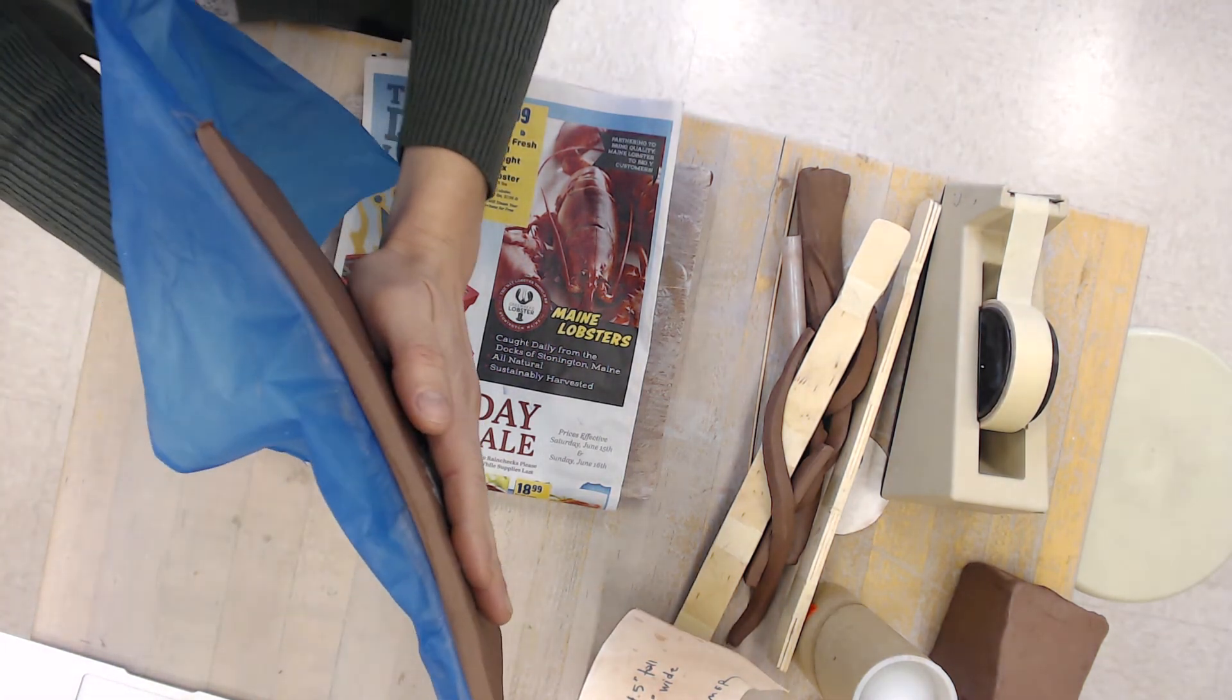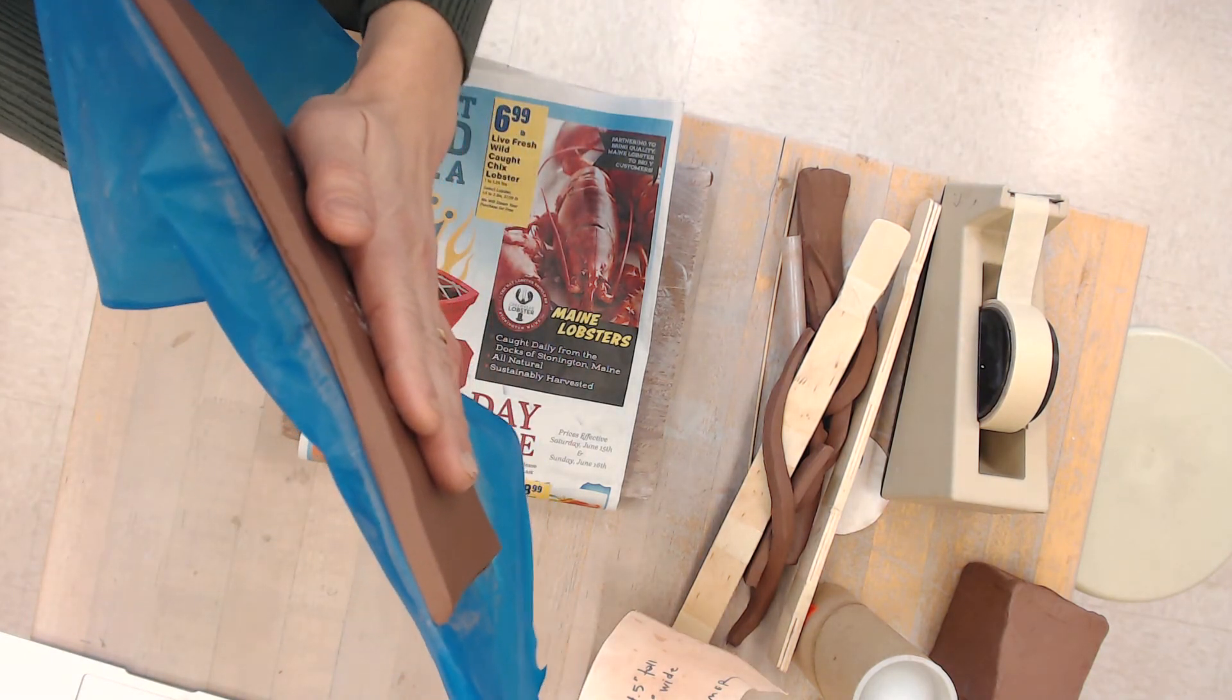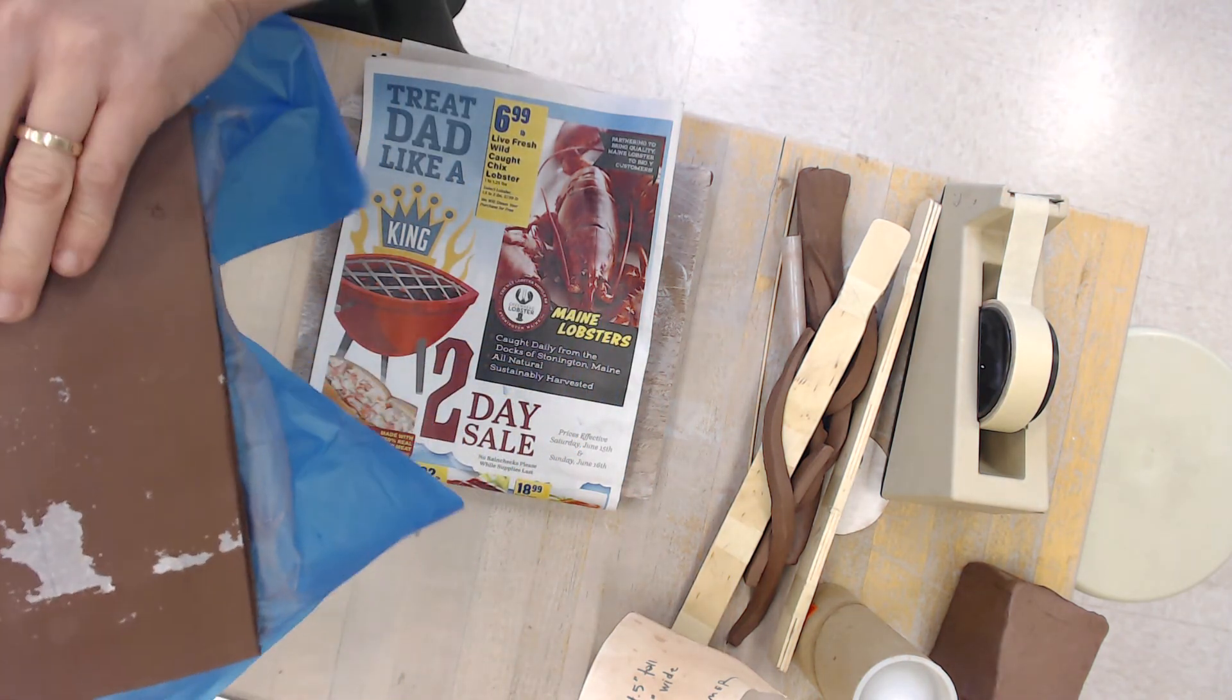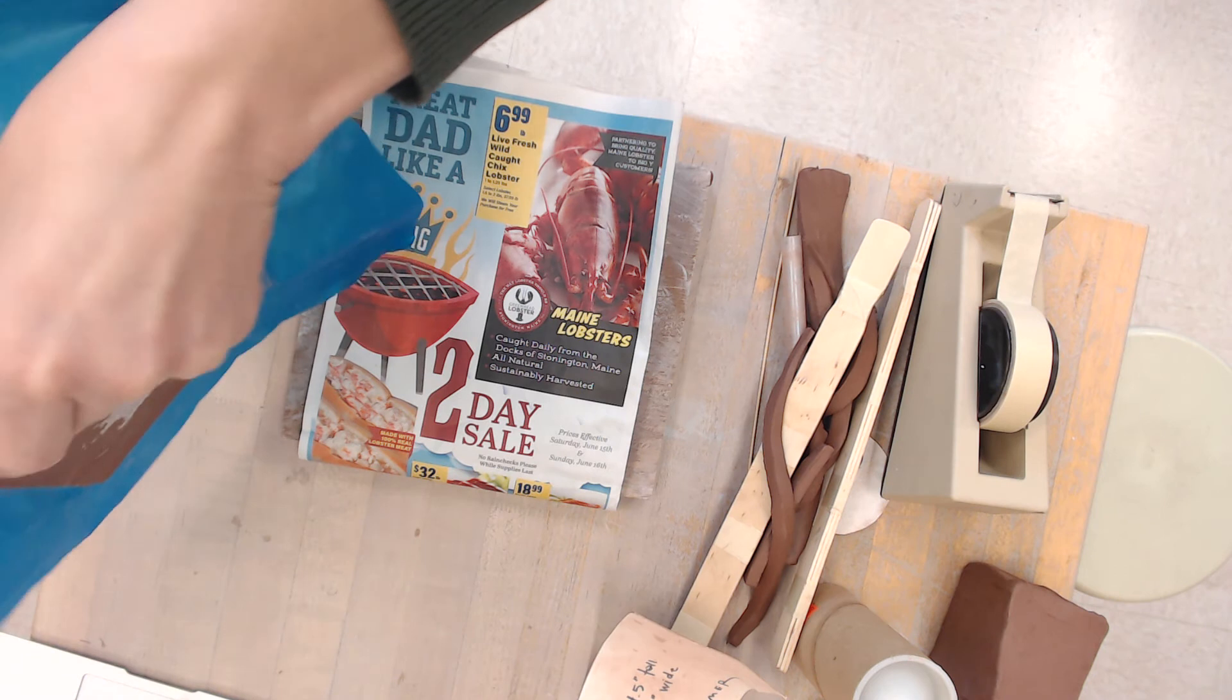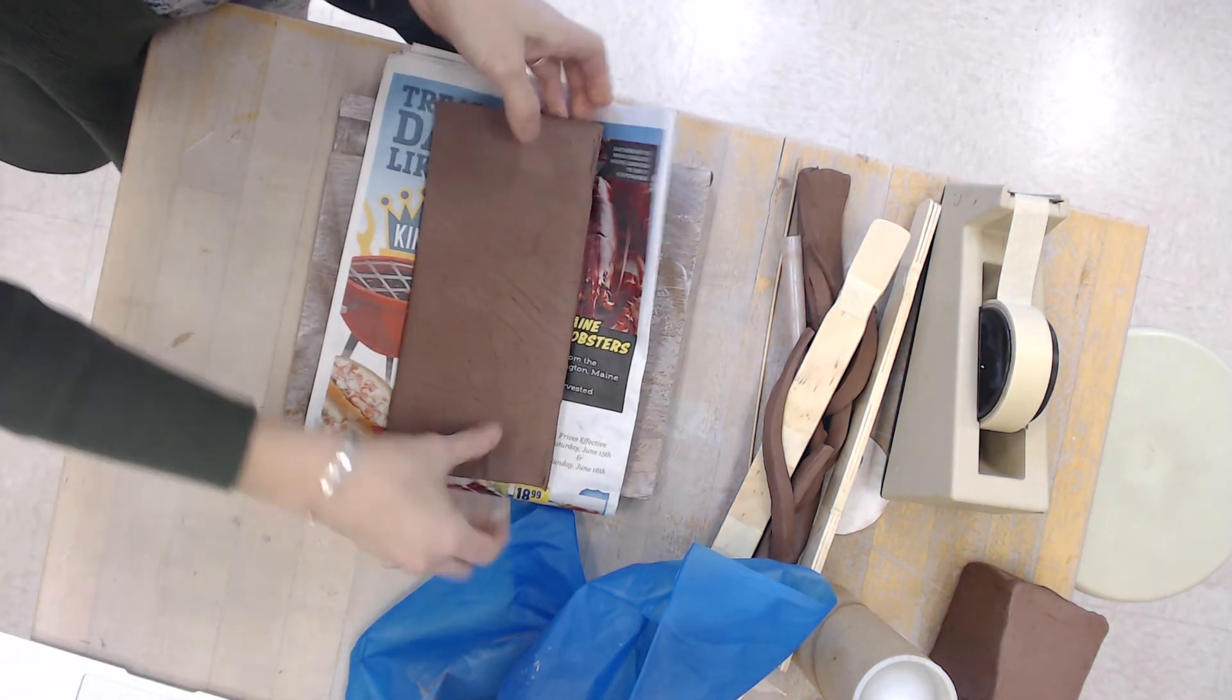And then I can look at my edge and make sure that it looks nice and even. And as you can see, it's a nice even consistency throughout. It's about the thickness of my pinky. And then I'm going to very carefully move this to my board. I don't want to stretch it out.